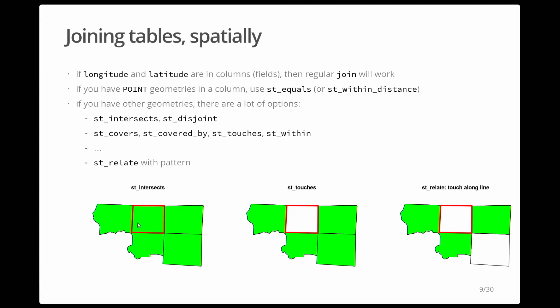That of course only works for points, since every record has a single longitude-latitude. If you have a geometry column you might want to use ST_Equals or look at distances. For other geometries like lines and polygons there are all kinds of predicates: intersects, disjoint, covers, covered by, touches, within, and so on — a whole list of operations you can perform.